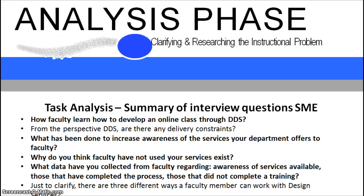One key area the team was interested in was how faculty learn about the DDS department and the services they offer. Our SME explained that faculty have three ways to develop an online course and work with the DDS: a two-week online self-paced course culminating with the Quality Matters designation, a 40-hour in-person workshop lasting a semester, and one-on-one consultation with one of the designers. While one-on-one consultations are the most time-consuming, they are the preferred method based on SME feedback. In all, 150 faculty have completed one of these three processes.